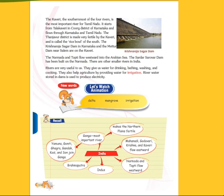The Krishna Raja Sagara Dam in Karnataka and the Mettur Dam near Salem are on the Kaveri. The Narmada and Tapti flow westward into the Arabian Sea. The Sardar Sarovar Dam has been built on the Narmada. There are other smaller rivers in India.